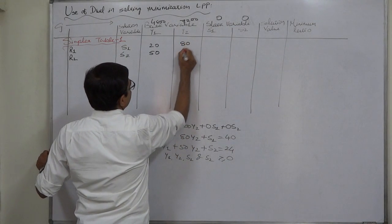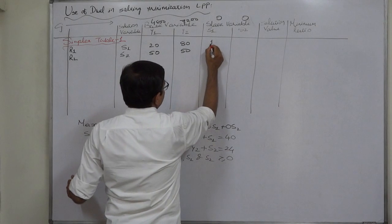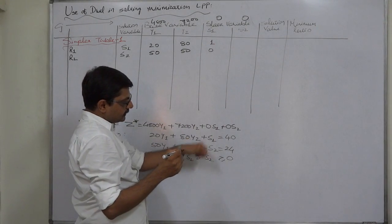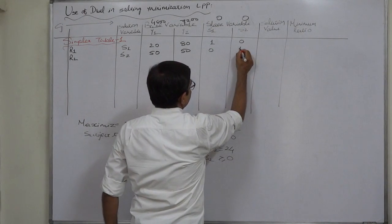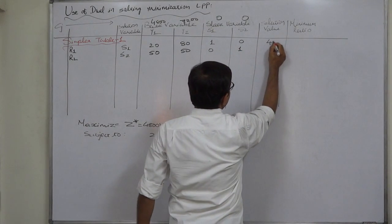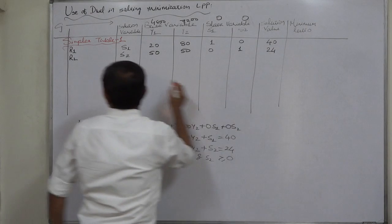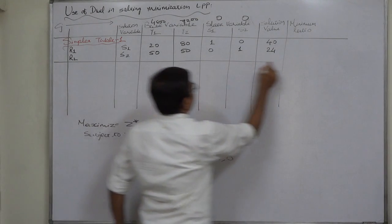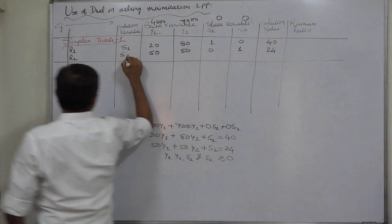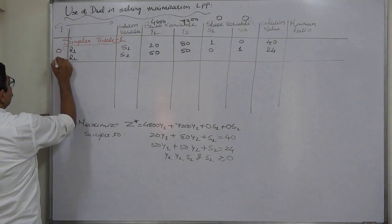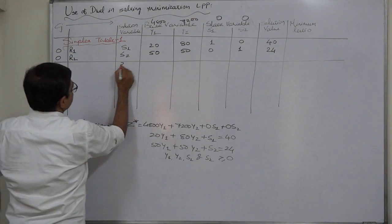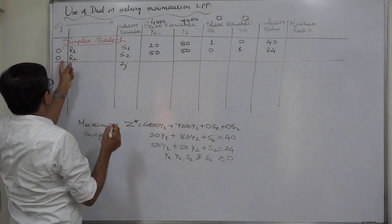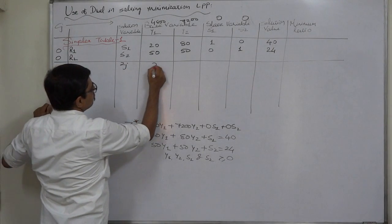For s1 the coefficients are 1 and 0, because in the second constraint there is no s1; and for s2 it is 0 and 1, because in the first constraint there is no s2. The solution values are 40 and 24. The Cj values for s1 and s2 are 0. The Zj values are: 0 × 20 + 0 × 50 = 0, and similarly 0 for the remaining columns.